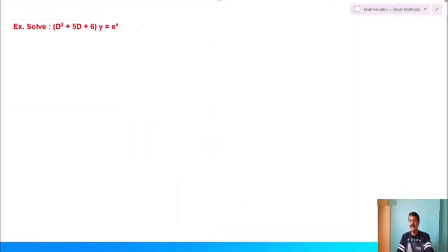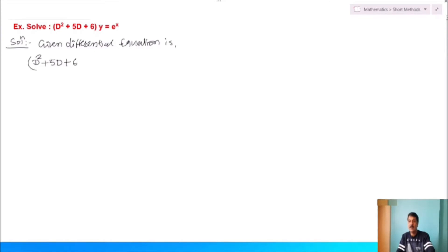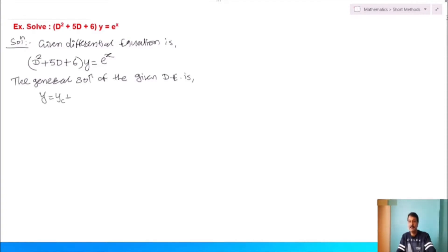Now consider another example on rule number one. Solve (D² + 5D + 6)y = e^x. The general solution is y = yc + yp. The complete solution has two parts: yc (complementary function) and yp (particular integral).